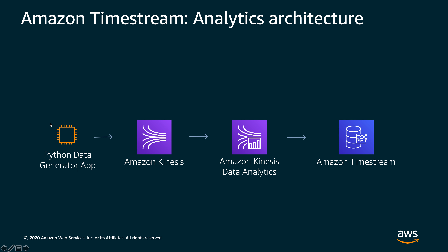What we're going to set up in this session is a Python data generator app that we've written and hosted on GitHub. This application is going to send data into Kinesis. That data is then going to be read and pulled out of Kinesis using Kinesis Data Analytics for Apache Flink, which will then push the data and write it directly into Amazon Timestream. The sample code for Flink is on GitHub, along with a connector hosted by the KDA team that will be able to push data into Timestream. You can also configure that connector with other streaming technologies, for example Kafka.